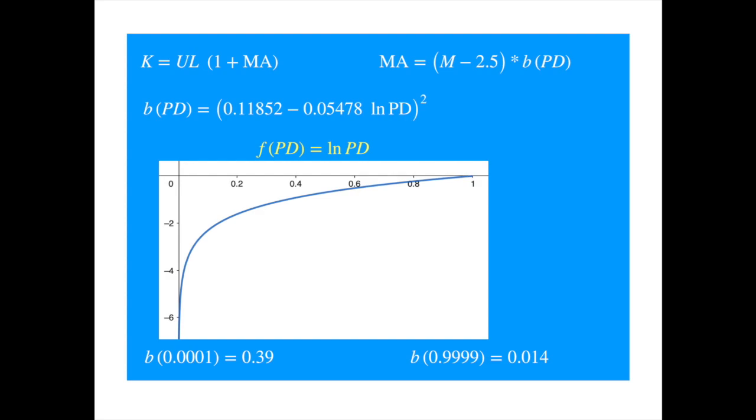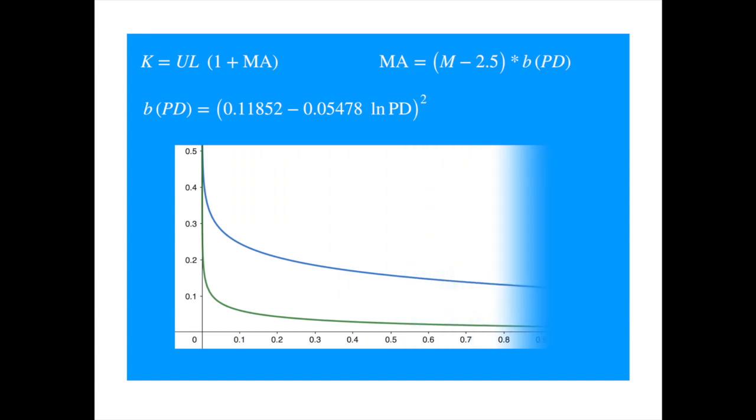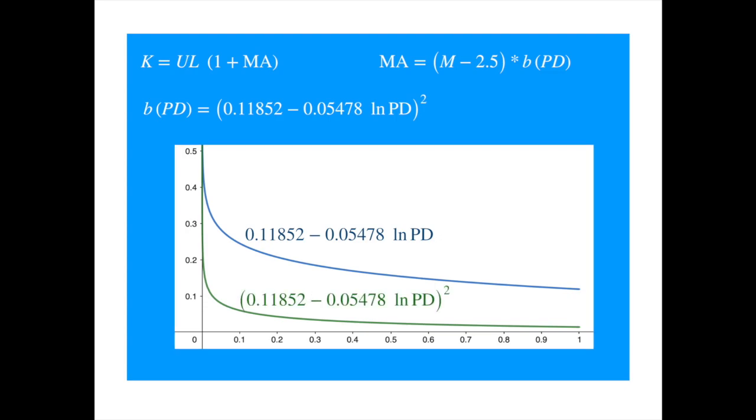By the way, if you ignore the square, then this equation inside is just a downward sloping linear relationship on the log scale. Squaring pushes the smaller values downwards.